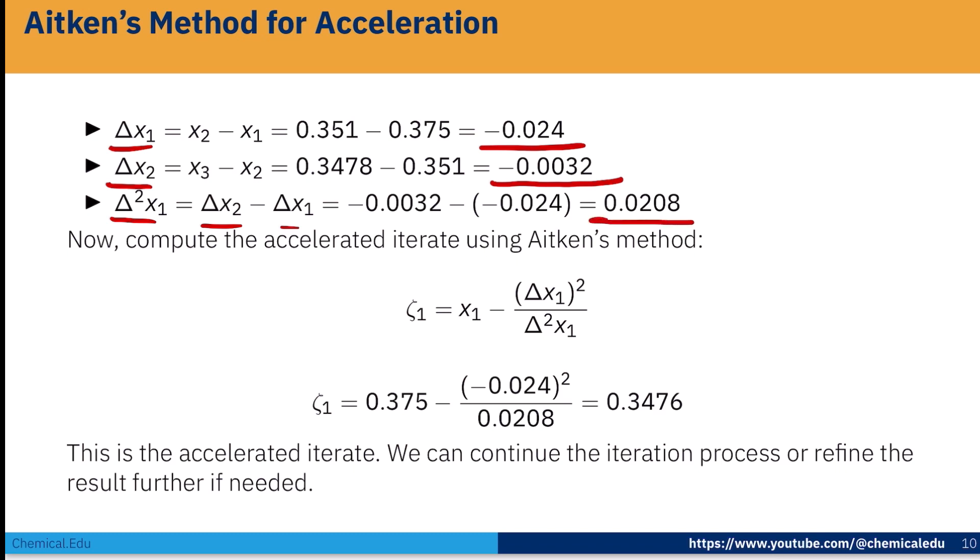Now use Aitken's method. ζ_1 = x_1 - (Δx_1)²/Δ²x_1. We plug this value. We know x_1 value, Δx_1 square by Δ²x_1. So ζ_1 = 0.375 - (-0.024)²/0.0208 = 0.3476.